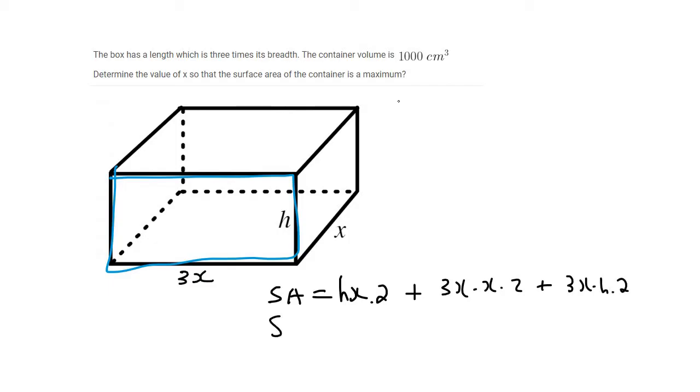Now we can just neaten up. So I'm just going to say s for surface area is going to be 2hx plus 6x squared plus 6xh or hx. Now these two can go together because they're the same. So that can just be 8hx plus 6x squared. And so there we have a formula for surface area.